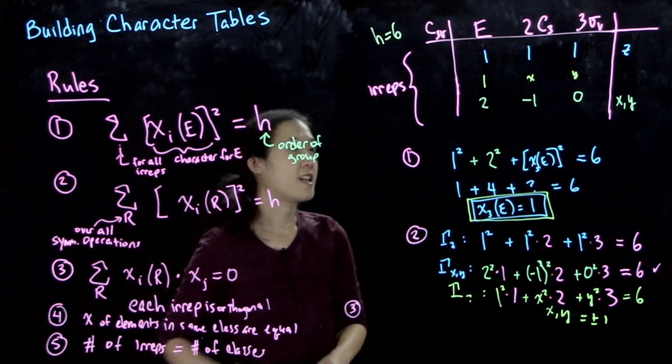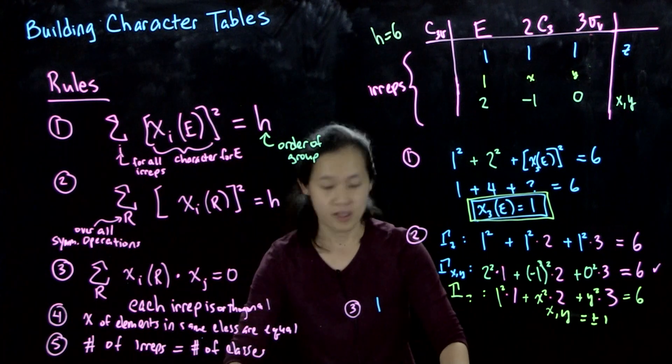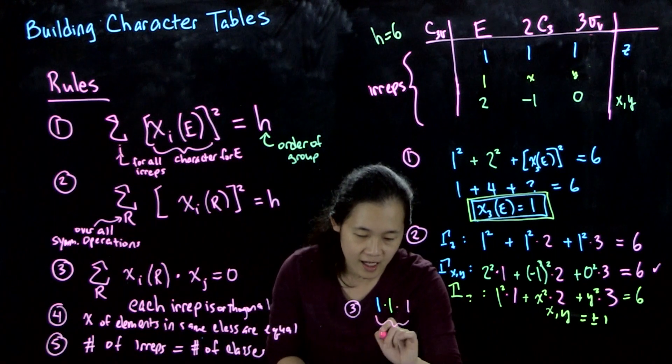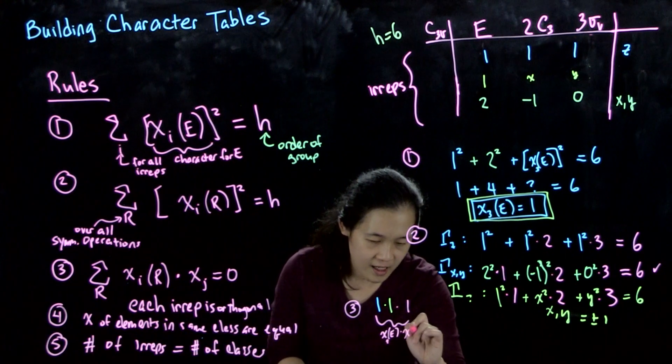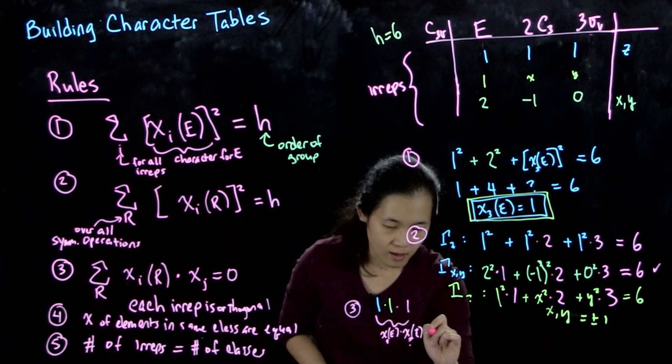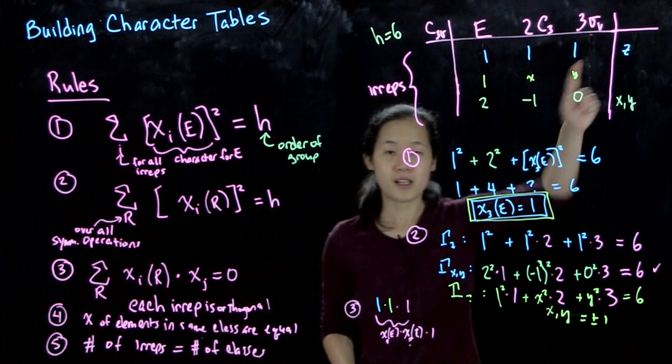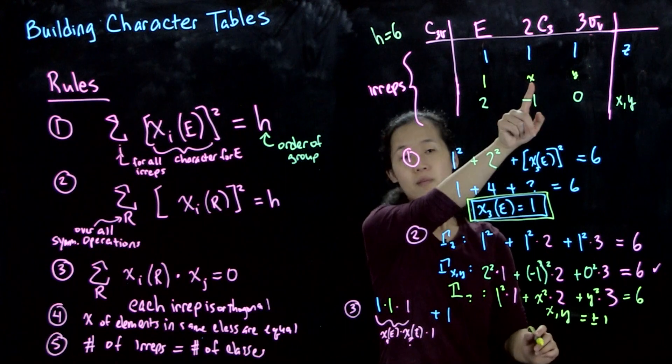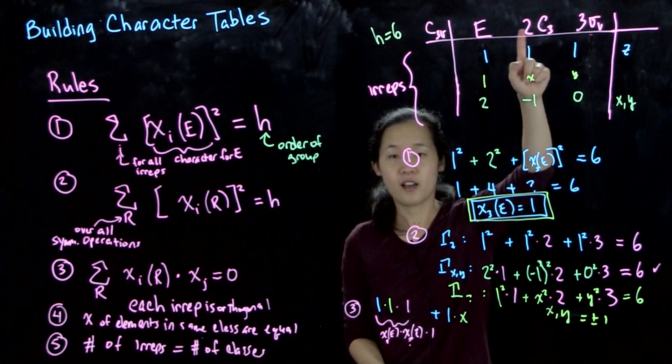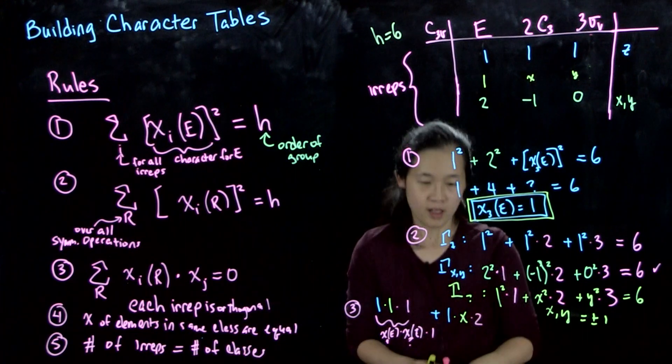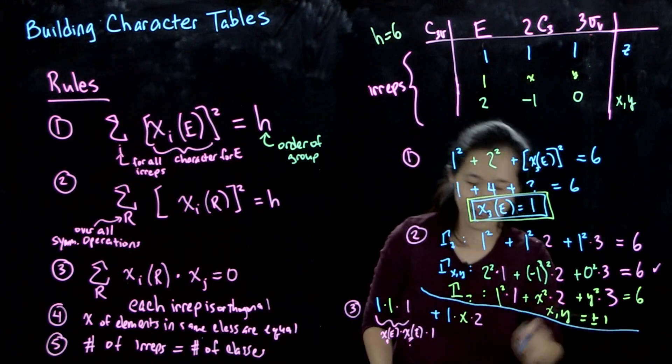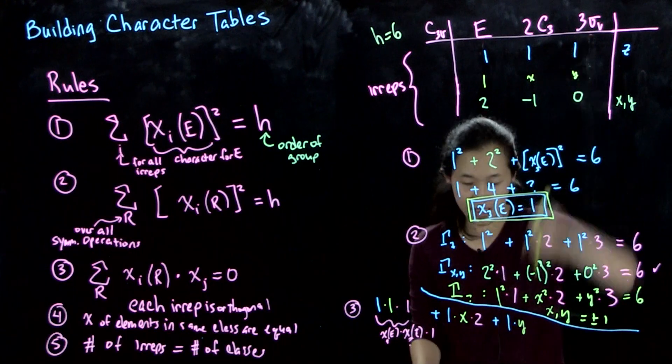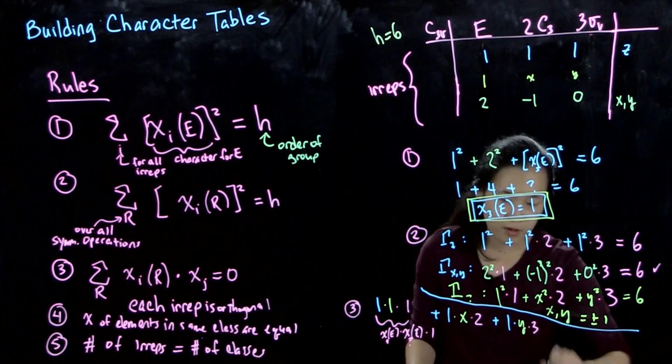So first, what we're saying is that in the E column, we're doing one times one, and the coefficient of the E column times one is here. This is our chi E of z times chi E of the question mark row times one, because we have one E. And then we're adding across the row, so the character of the z EREP is one, and the character of the missing EREP for the C3 is unknown. We'll call this x. And the coefficient of C3 is two, times two. And then our last column is plus one times y times three.